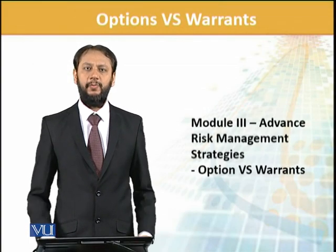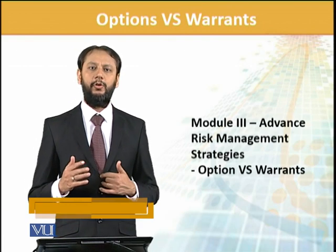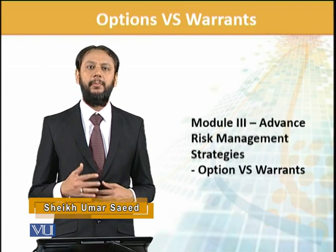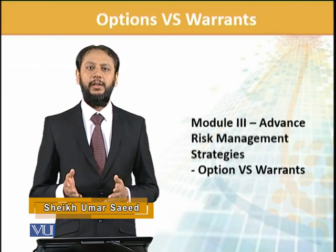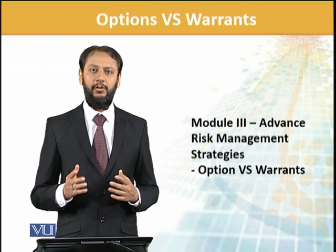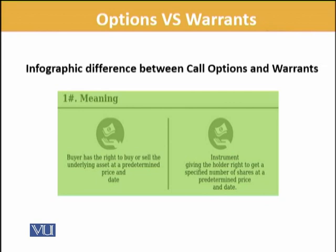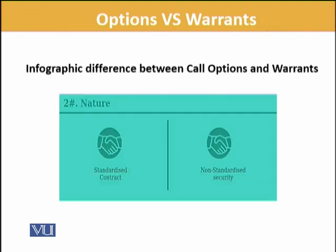We are doing advanced risk strategy. We talked about warrants and options, and there are a few differences which we need to know and learn. The buyer has a right to buy or sell an underlying asset at a predetermined price and date — this is in the case of options. Whereas in the case of warrants, it is an instrument giving the holder the right to get a specified number of shares at a predetermined price and date. This is one of the key distinctions.